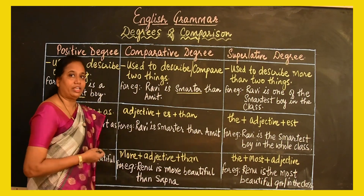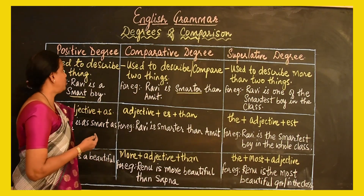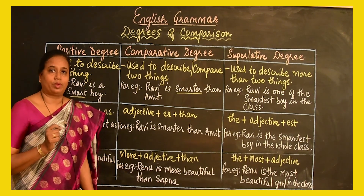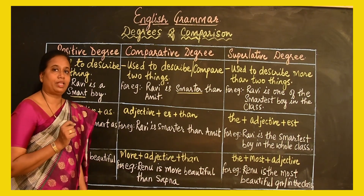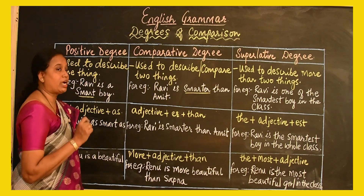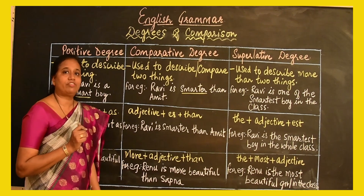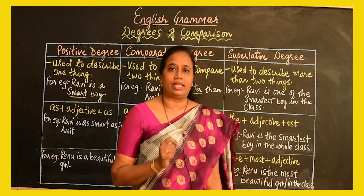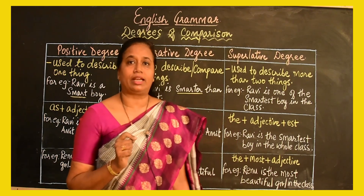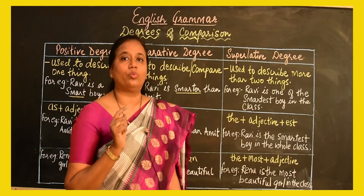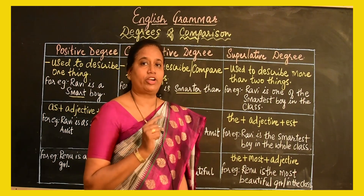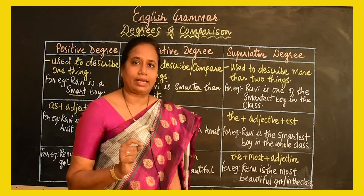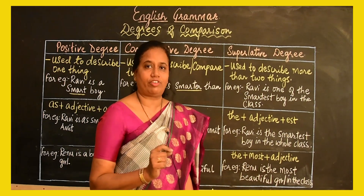In the positive degree, we use these adjectives in their simple form. For example, 'Ravi is a smart boy.' Another thing we need to understand in the positive degree is that it is used to describe just one thing. We just use the word 'smart' to describe how Ravi is.